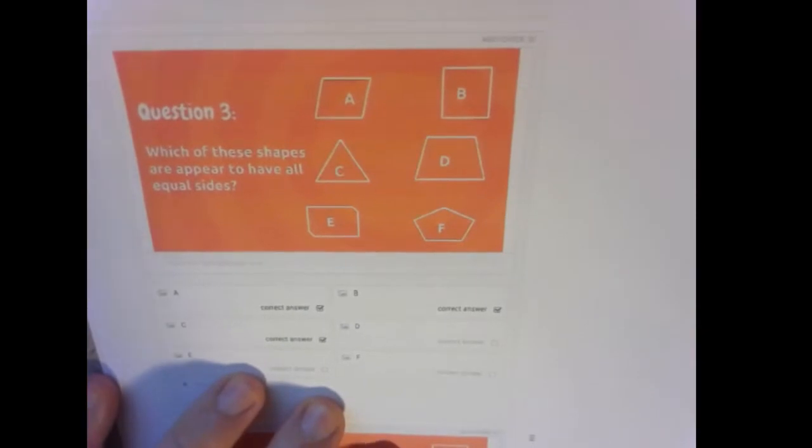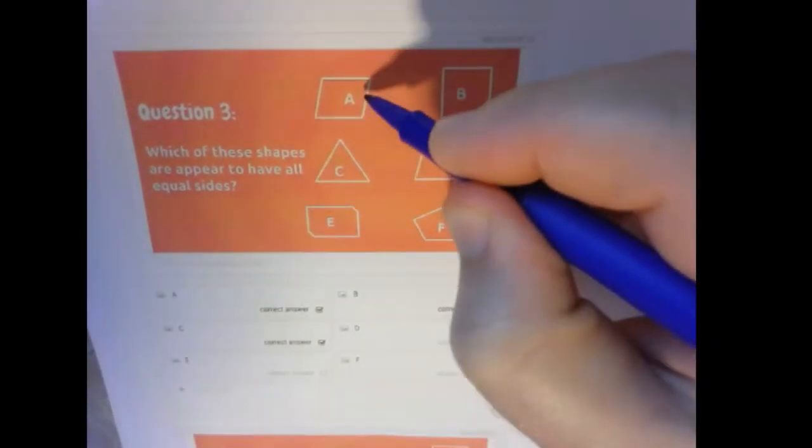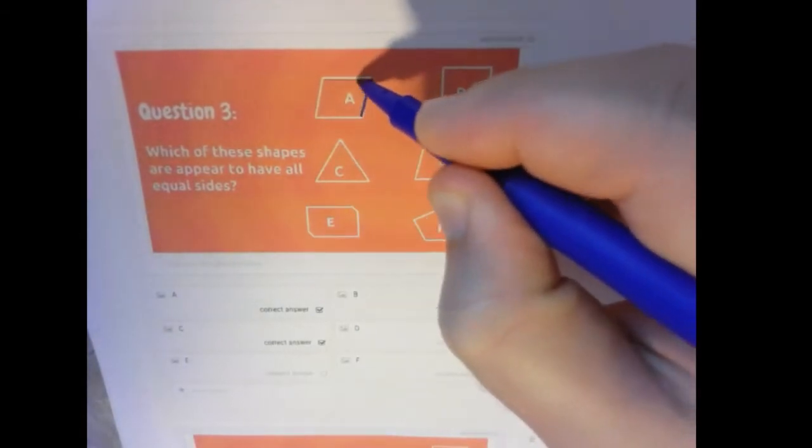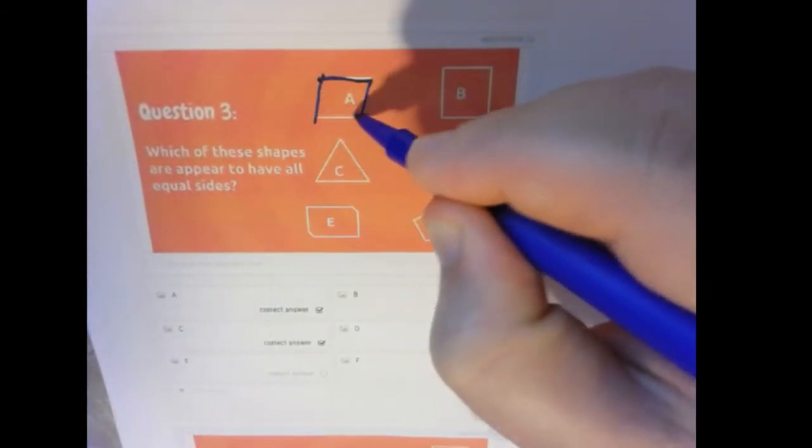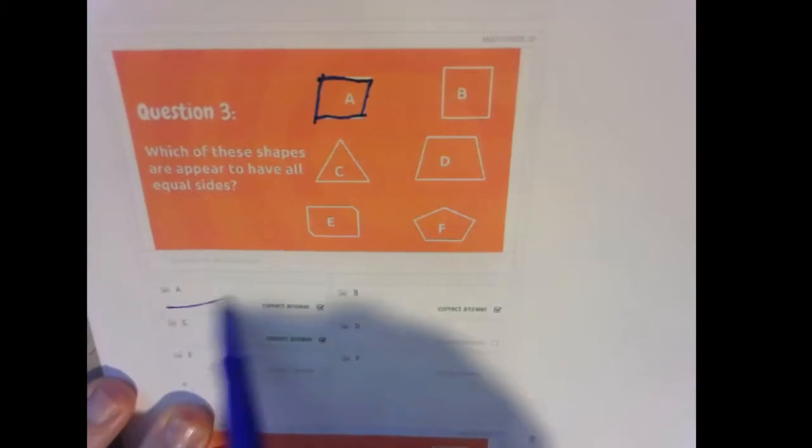All right, which of these shapes appear to have all equal sides? Well, those sides all look to be about the same length, so circle A.